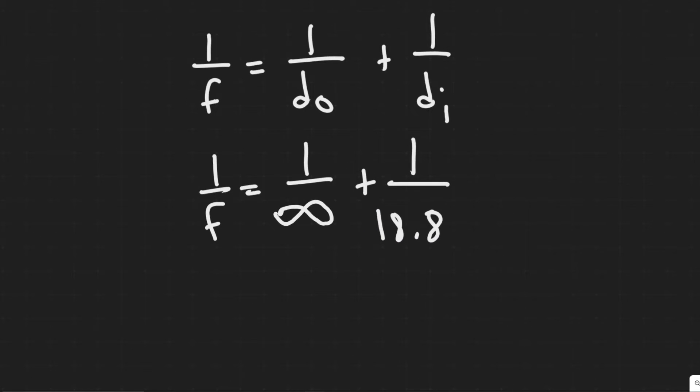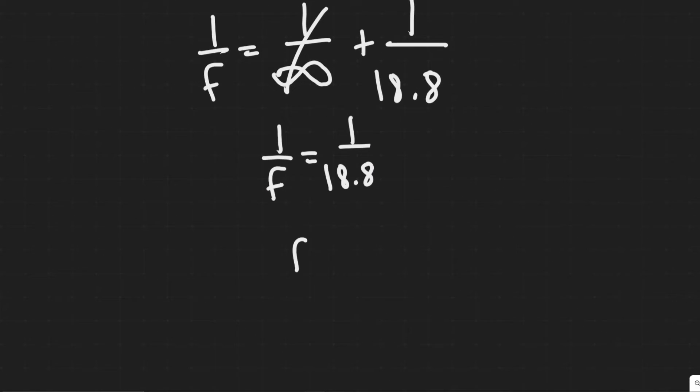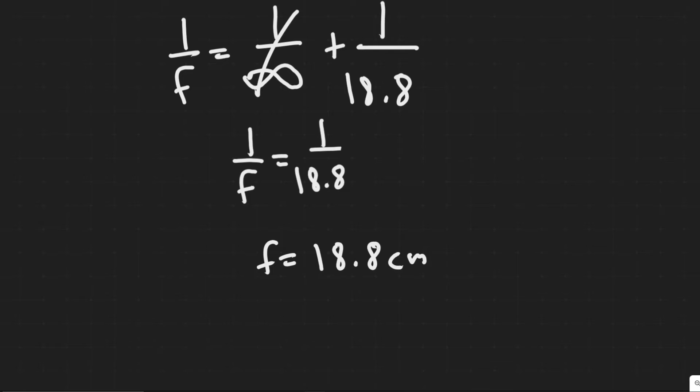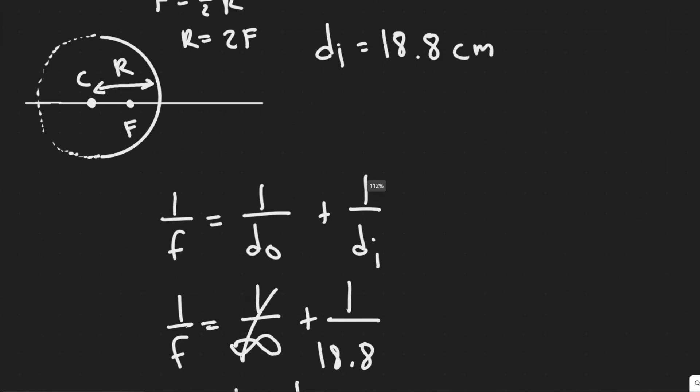So the thing you should notice is one over infinity, if you treat it like a limit, it basically goes to zero. So this value is basically zero, telling us that one over the focal length is just equal to one over 18.8. And so this tells you basically F is equal to 18.8 centimeters.